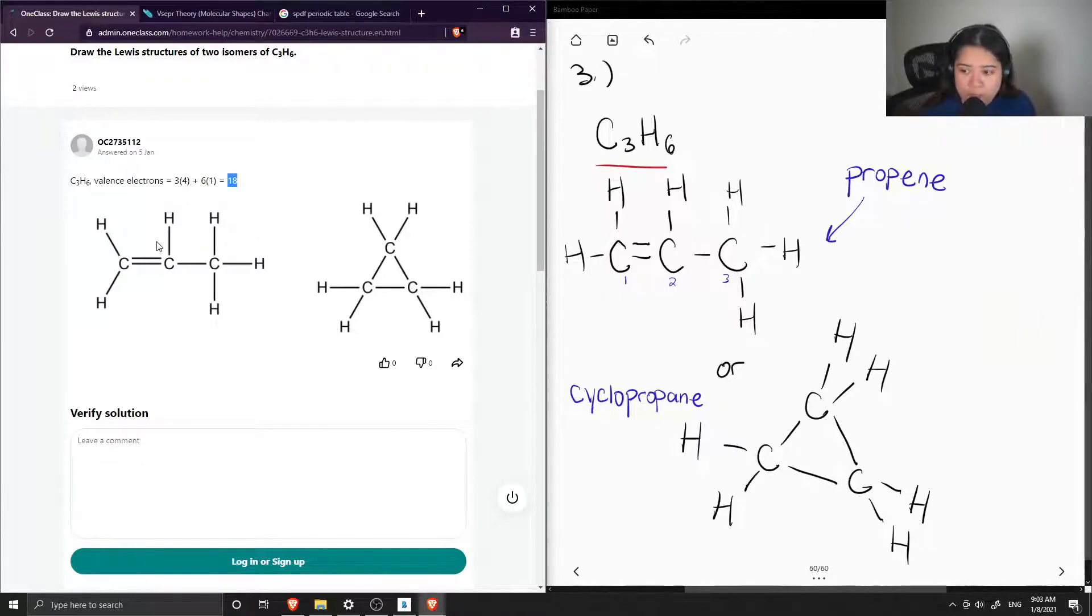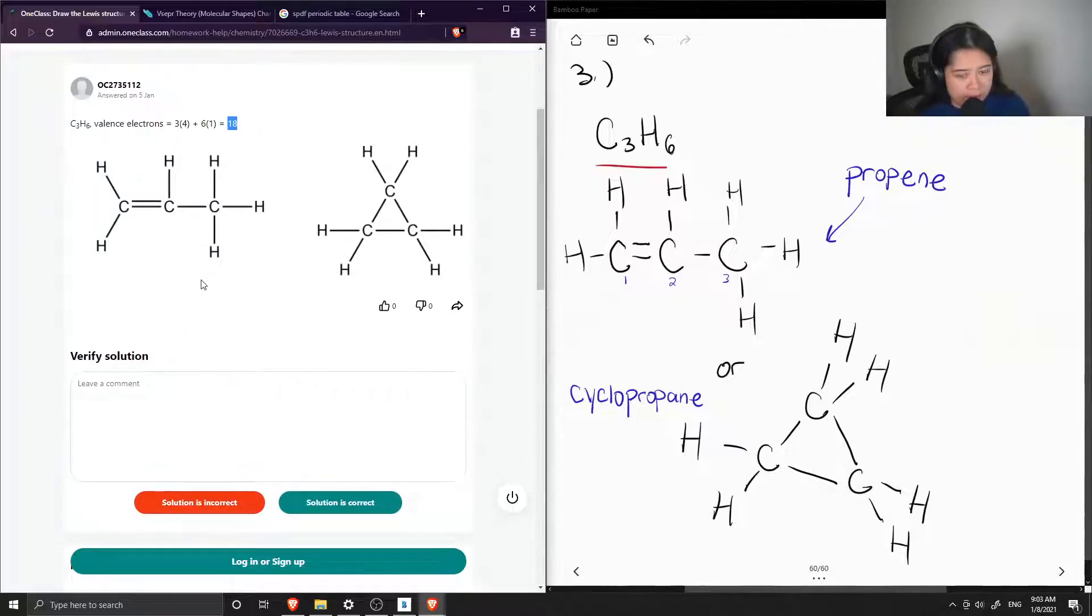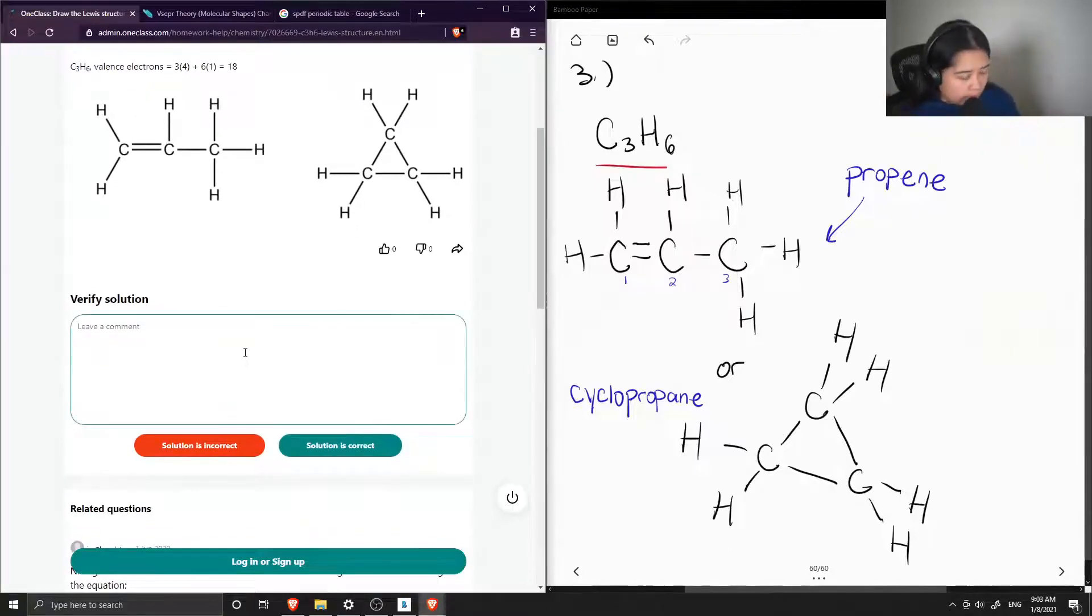participating in the bonds—each bond has two electrons—we can count nine bonds, so 18 total. None of the carbons or hydrogens have a lone pair, so the solution is correct.